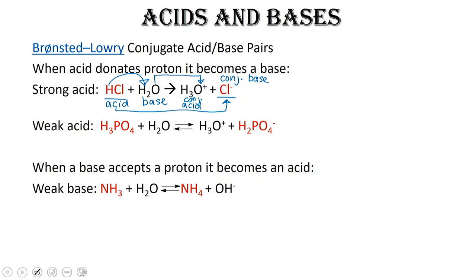For this situation, we have two conjugate acid-base pairs. We've got HCl, Cl⁻, and we've got H₂O and H₃O⁺. So these are two conjugate acid-base pairs. Notice that there's two for every reaction. Let's take a look at another reaction.